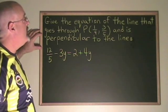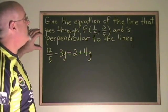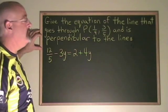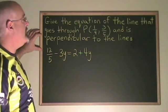In this question, we need the equation of the line that goes through the point 1 quarter, 3 fifths and is perpendicular to this line.